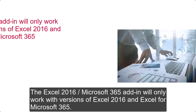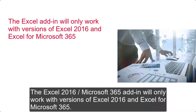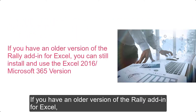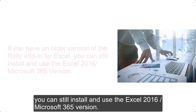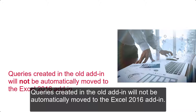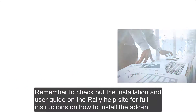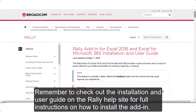The Excel 2016 Microsoft 365 add-in will only work with versions of Excel 2016 and Excel for Microsoft 365. If you have an older version of the Rally add-in for Excel, you can still install and use the Excel 2016 Microsoft 365 version. Queries created in the old add-in will not be automatically moved to the Excel 2016 add-in. Remember to check out the installation and user guide on the Rally help site for full instructions on how to install the add-in.